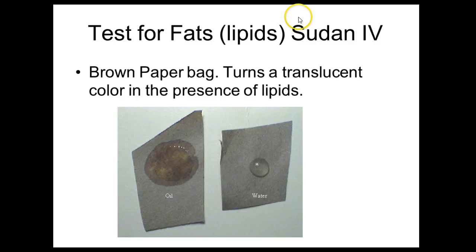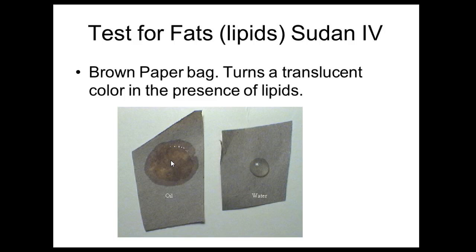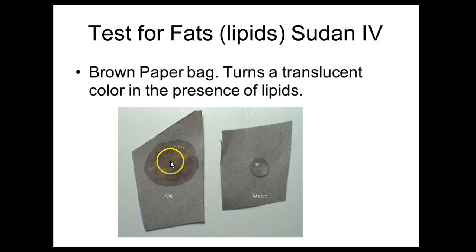We also have the brown paper bag test for fats and lipids. It turns a translucent color in the presence of lipids. If you've ever gone to Five Guys and gotten fries, they throw those fries in the bottom of the bag and you get that greasy, translucent-looking bag because the fries were fried in oil, and oils are lipids. If you place water on a paper bag, it dries and the bag looks normal. But if oil gets on there, it stays that greasy, translucent color.